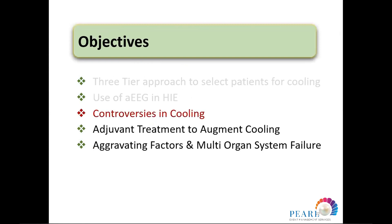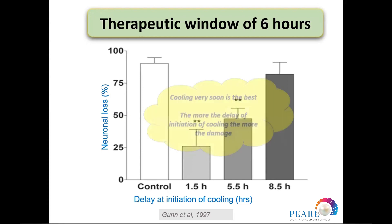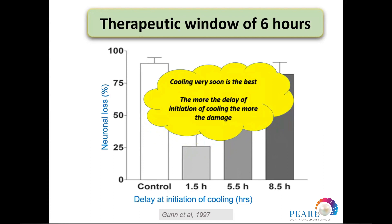Some controversies in cooling: according to Ben and colleagues since 1997, they induced hypoxia ischemia in sheep and cooled them at 1.5, 5.5, and 8.5 hours. Those cooled earliest had the least neural loss, and those cooled latest — at around 8.5 hours — had up to 80% or higher neural loss. This means that starting cooling very soon is best, and the more the delay in initiating cooling, the more the damage.